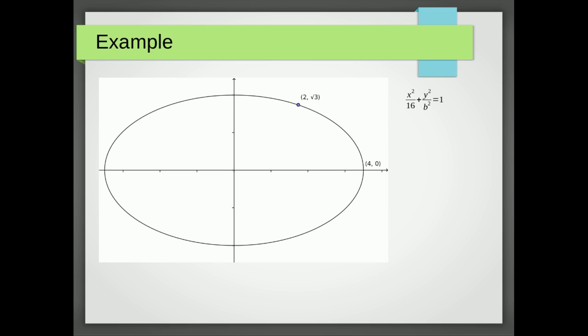But we do have a point, so we do have some values that we can put in for x and y. So 2 squared is 4 and root 3 squared is 3. Now we can see that 4 over 16 is a quarter, so if we take a quarter away from both sides, we end up with 3 over b squared equals 3 over 4.